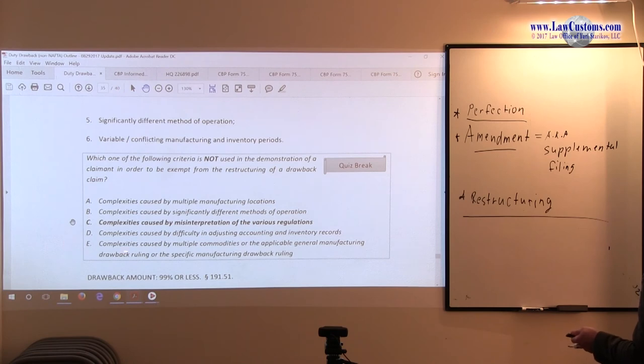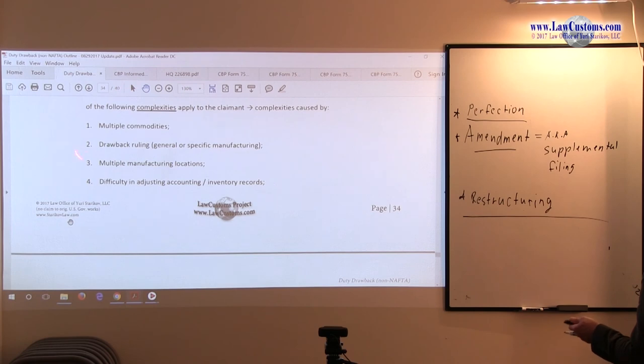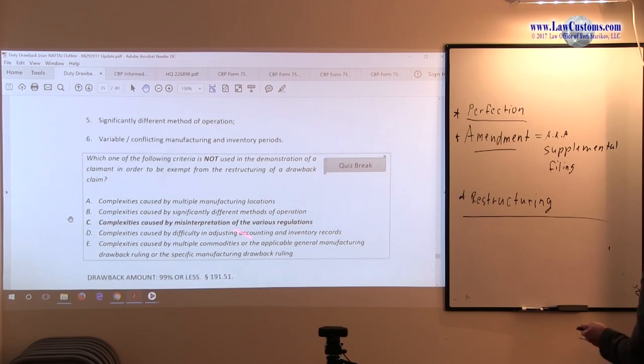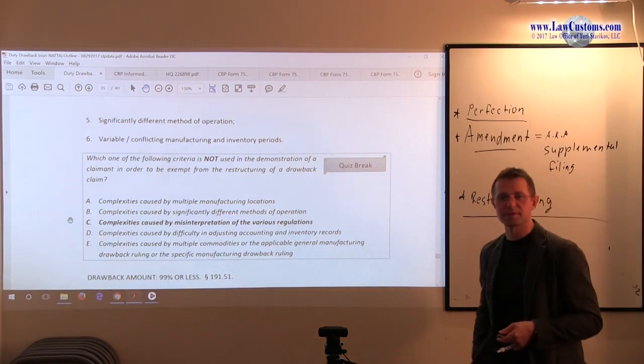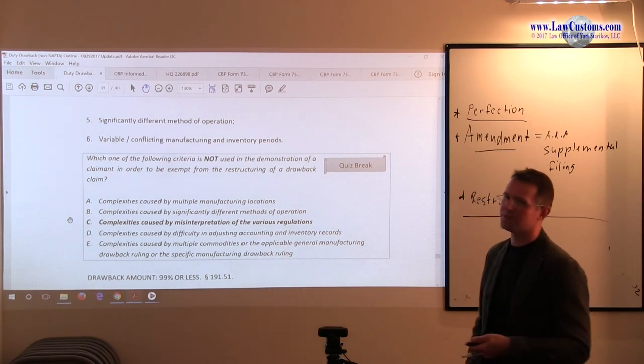E: complexity is caused by multiple commodities or applicable general manufacturing drawback ruling or specific manufacturing drawback ruling. So the drawback ruling, general specific for manufacturing, is on the list. So this one is okay. Since we are looking for one that's not, this is clearly the line item which is missing from those six reasons to say no. So C is our choice.